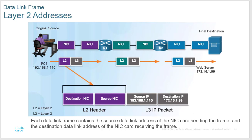The IP source and destination addresses never change through the entire transit of a packet. However, the source and destination MAC addresses — the layer 2 addresses — always change. At each router, the NIC/MAC address information is stripped off and new MAC address information is put on for the next local loop. The router does this automatically. MAC addresses are only meaningful for the local loop between hops.